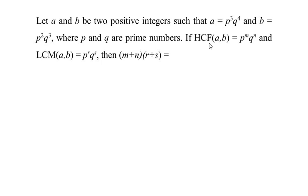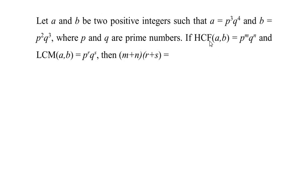If the HCF, or highest common factor, of the two positive integers a and b is given as p to the power of m times q to the power of n, and the LCM of a and b is given as p to the power of r times q to the power of s, then m plus n times r plus s is equal to what? We have to find the product of the sum of the powers of the HCF and the sum of the powers of the LCM.